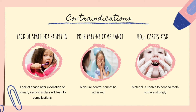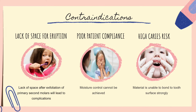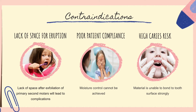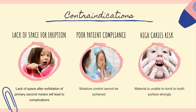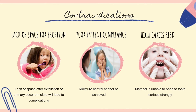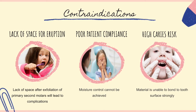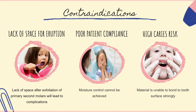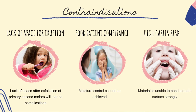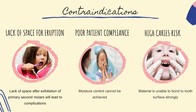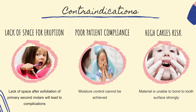The next contraindication is poor patient compliance. Moisture control will not be possible to achieve if the patient is not compliant, and moisture control is a necessary element for GFRCR application to avoid debonding failure. Therefore, the space maintainer will fail if moisture control is not achieved. The last contraindication is patients with high caries risk, as a healthy abutment tooth is required for proper bonding of GFRCR on the tooth surface.